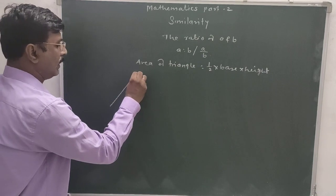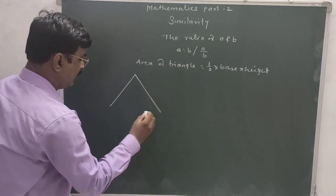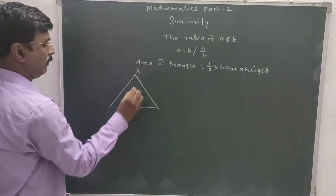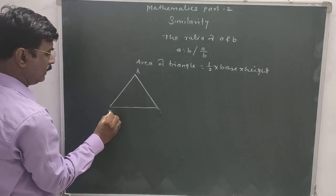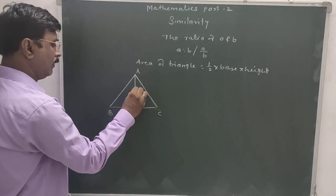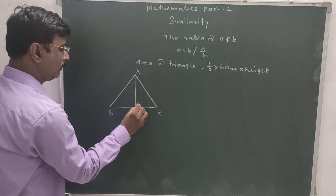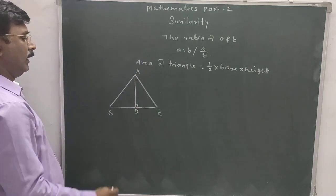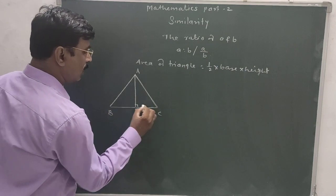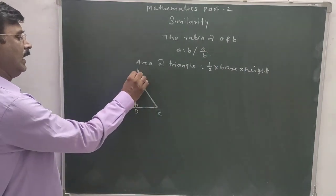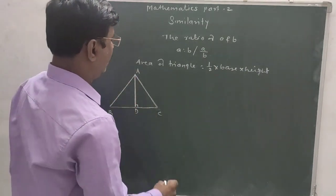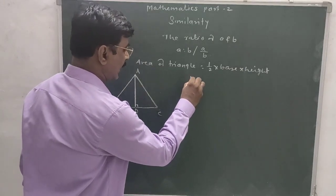In an acute triangle ABC, BC is called the base and AD is called the height. AD is the perpendicular height from vertex A to base BC.